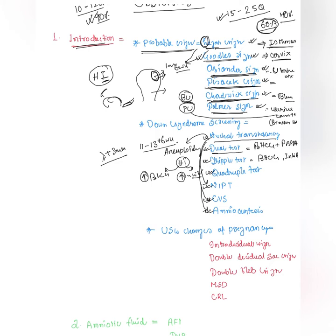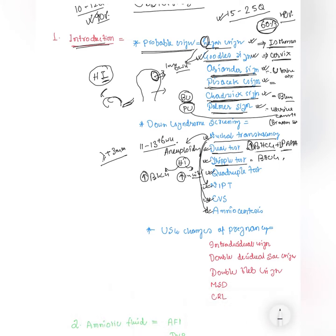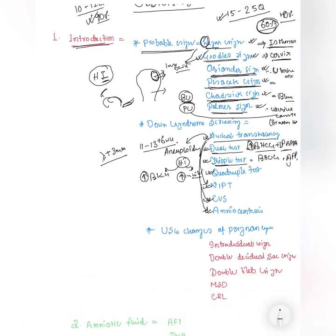The dual test involves beta-HCG increasing and PAPPA decreasing. The triple test includes three markers: beta-HCG, AFP, and unconjugated estriol (UE3). Remember it is UE3, not UE2 — watch out for that rollout option in the exam.